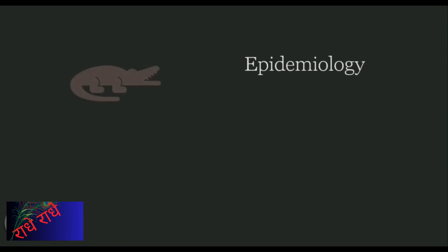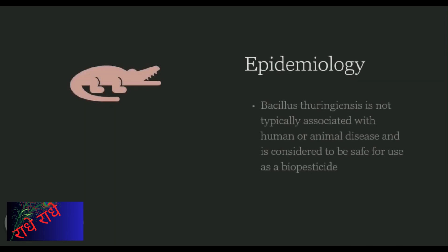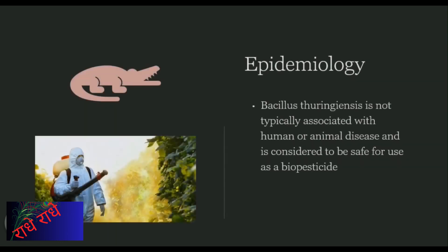B. thuringiensis is a type of bacteria used widely in biopesticide applications. Not a pathogen, it is safe for human and animal use, releasing a toxin which is toxic to pests, but harmless to other organisms, making it an effective and safe form of pest control.